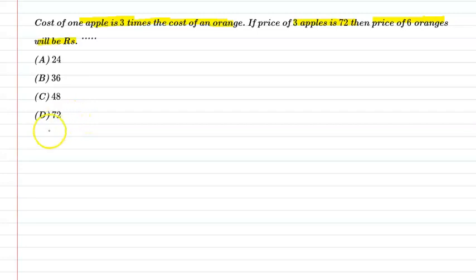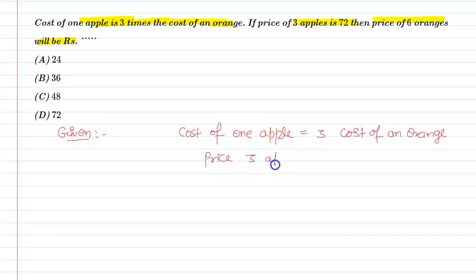First of all, write down the given information. That is: cost of one apple equals three times the cost of an orange, and price of 3 apples equals Rs. 72. Now let's move on to the solution part.